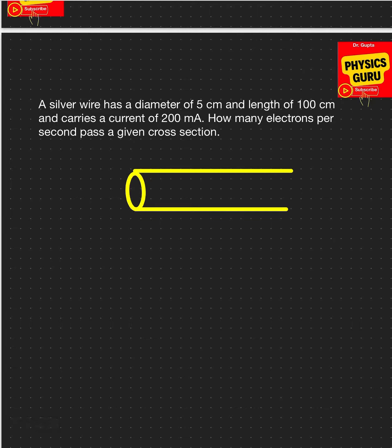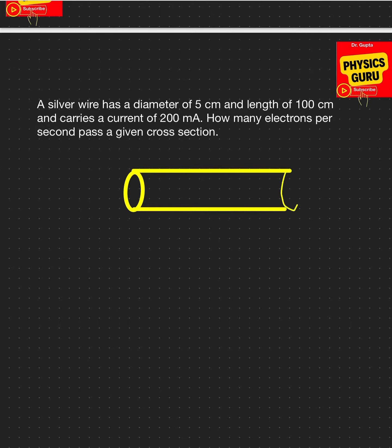The diameter is given as 5 centimeter, the length is given as 100 centimeter. That's the length, that's the diameter here. And the current that is passing through this one is also given, so the current is 200 milliamp.